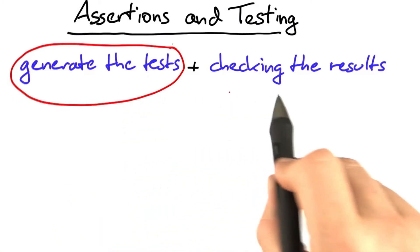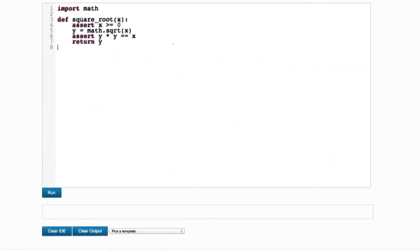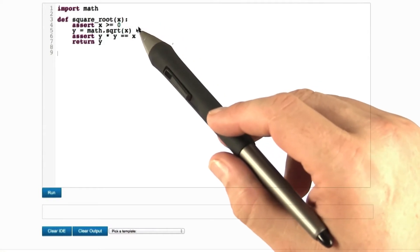Let me illustrate this with a very simple example. The idea is that we're going to take a square root function with assertions integrated and just use random testing to test it.